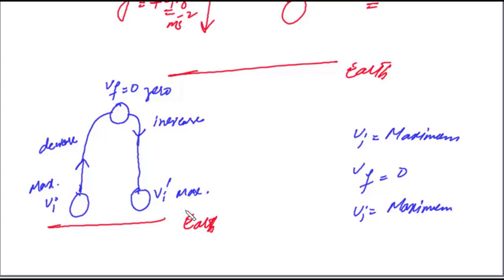یہ earth کی gravitational field میں ایک ball کی motion تھی۔ ہم نے دیکھا کہ شروع میں initial velocity maximum تھی، آہستہ آہستہ کم ہوتے ہوتے final point پر zero ہو گئی۔ پھر جب ball earth کی طرف واپس آئی تو velocity دوبارہ بڑھنے لگی اور ابتدائی point پر دوبارہ maximum ہو گئی۔